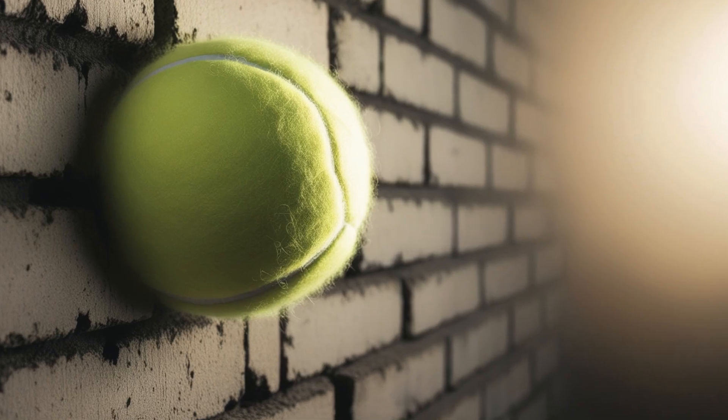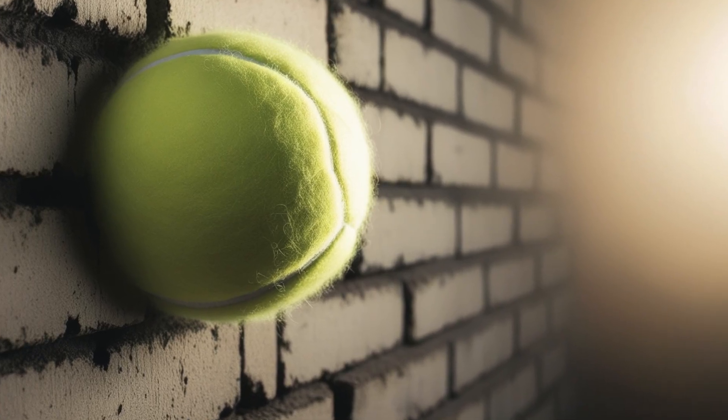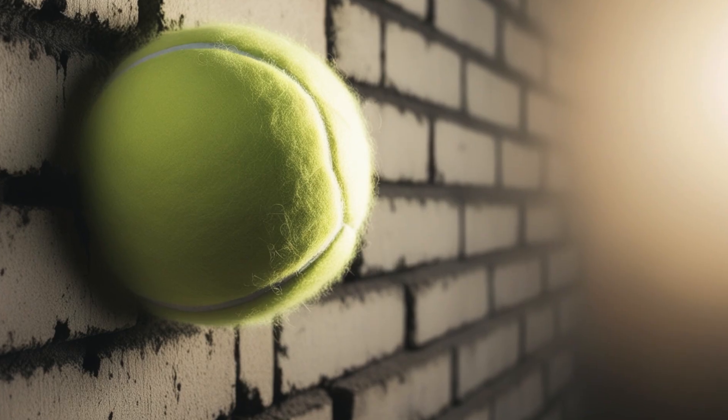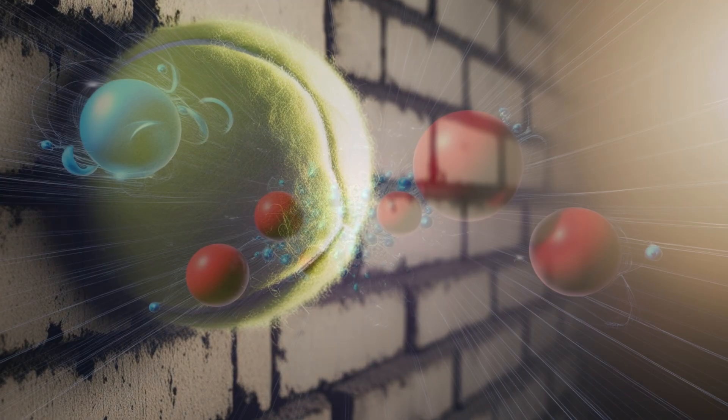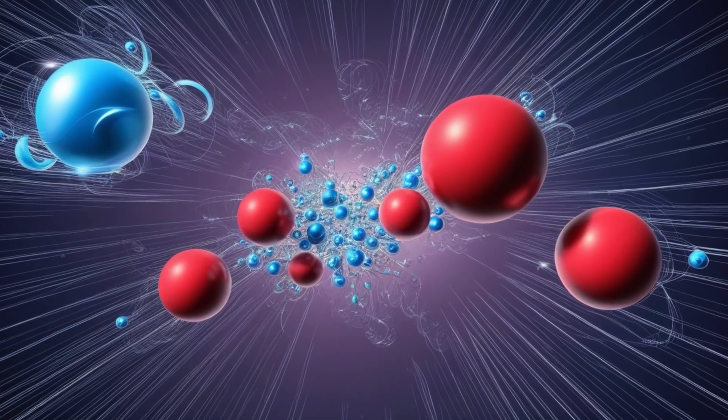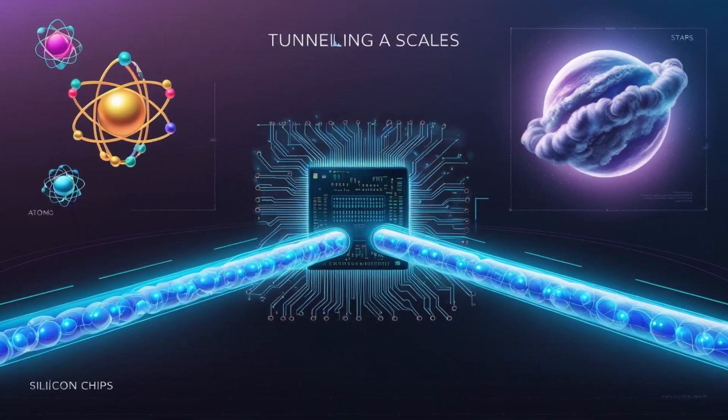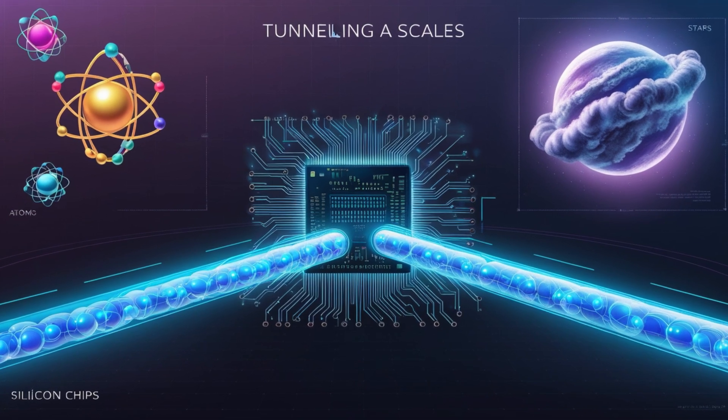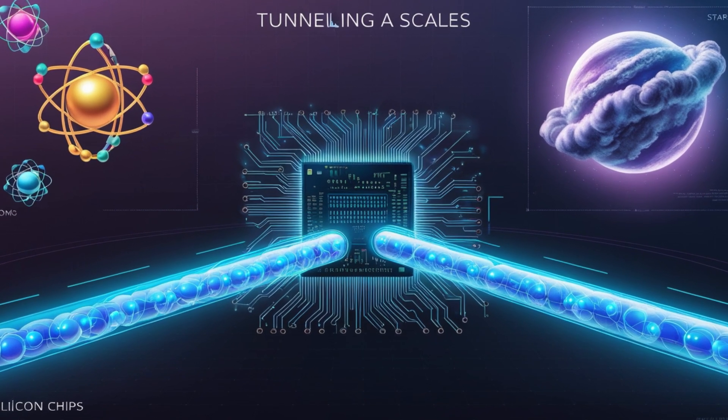Of course, for macroscopic objects, the probabilities are so absurdly small that you'd be waiting longer than the lifetime of the universe. But at the tiny scale of electrons and protons, the odds are big enough to matter. That's why tunneling shows up in atoms, in stars, and in silicon chips, but not in your everyday life.